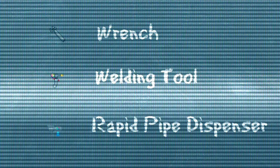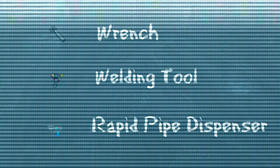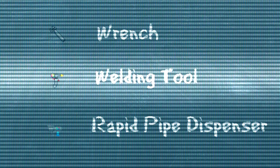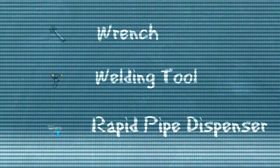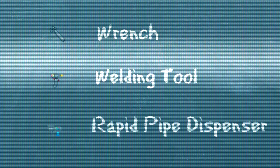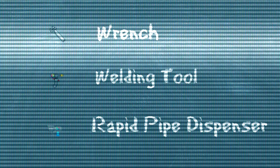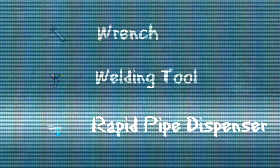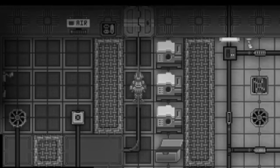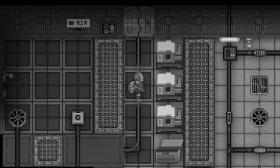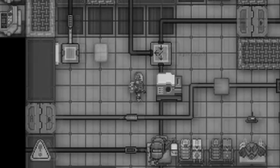For this task you will need the following items: a wrench, a welding tool, and most importantly, a rapid pipe dispenser or RPD for short. In the event your station's budget cannot afford the RPD, please use the bulkier and outdated pipe dispenser located in your atmospherics department.